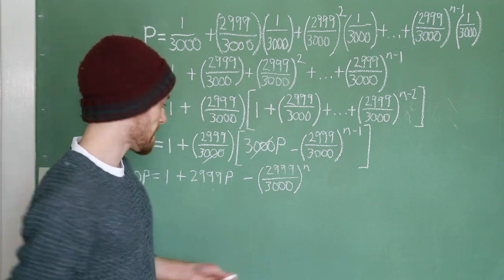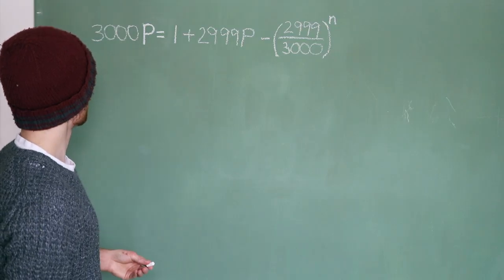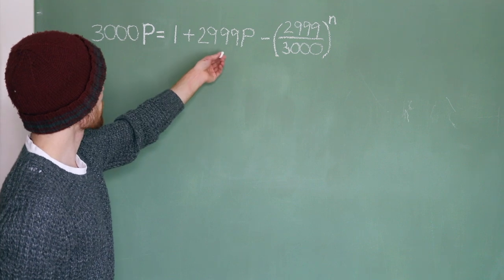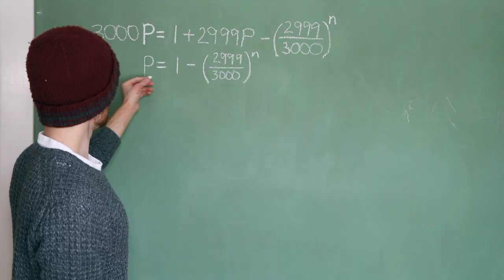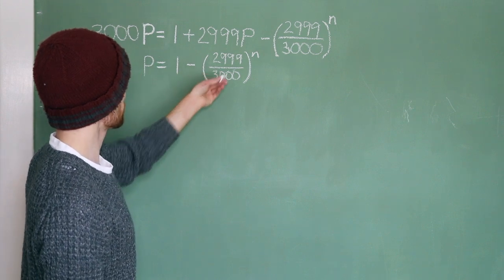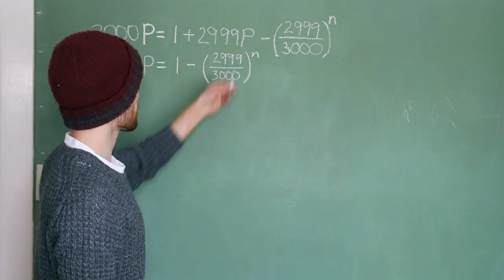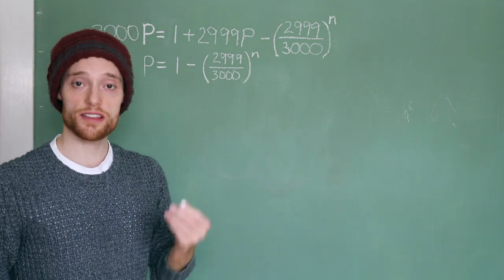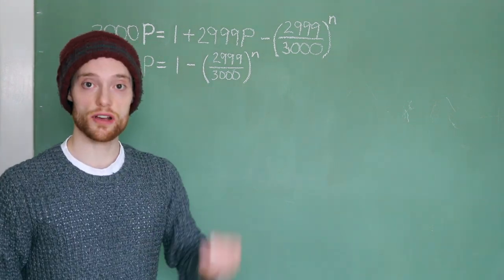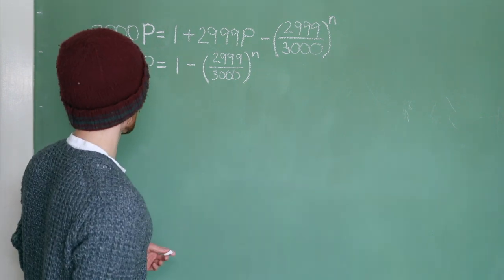So, let's keep going. Through the magic of editing, I'll move this up here, and then let's subtract 2,999p from each side. That gives us p equals 1 minus 2,999 over 3,000 to the power of n. So, we've solved for the probability, which is cool, but that's our independent variable. It's n we're trying to figure out, so let's keep going and try to solve for n.